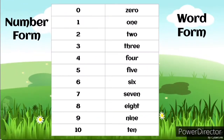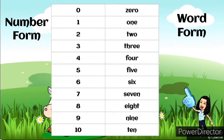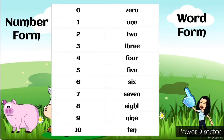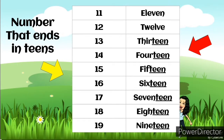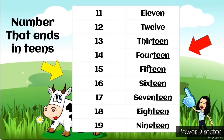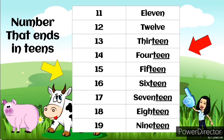Now look at the examples. We have the number form and the word form from 0 to 10. On the left side are numbers written in numerals, and on the right side are numbers written in words. There are also numbers that end in 'teens,' except for 11 and 12 — we have 13, 14, 15, 16, 17, 18, and 19.